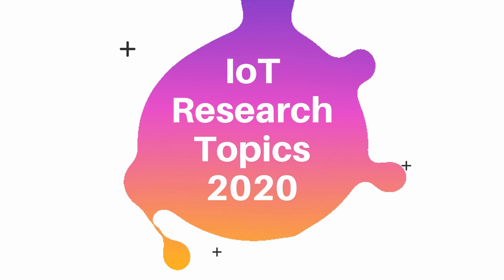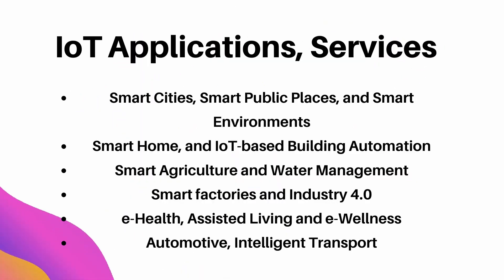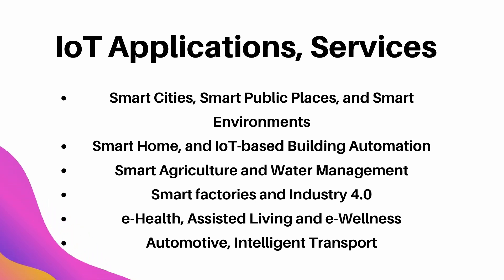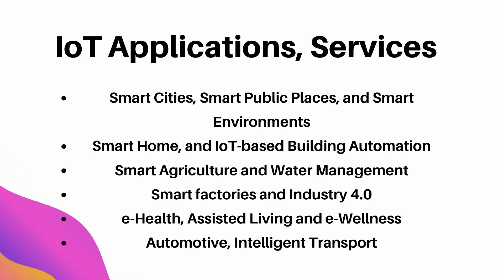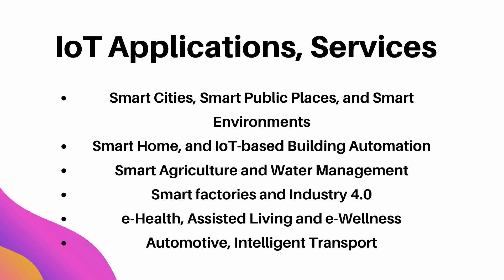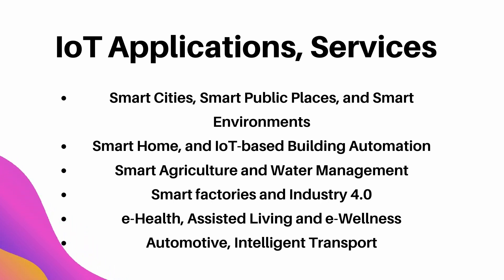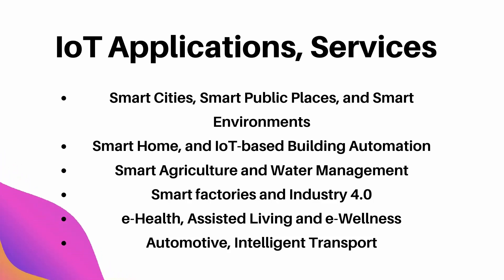Also, don't forget to subscribe to this channel. The six major applications are: smart cities, smart public places and smart environments; smart home IoT-based building automation; smart agriculture and water management; smart factory and Industry 4.0; health assisted living and IoT healthcare technologies; and finally, automotive and intelligent transport. These topics and research opportunities will be discussed in this video to help you select a topic for your research or project.